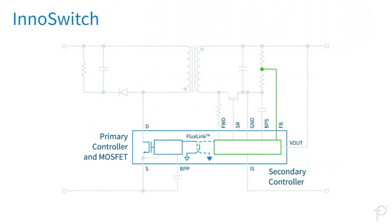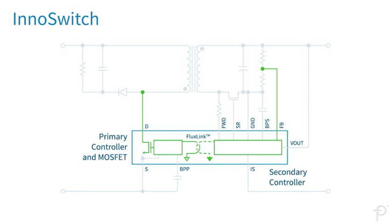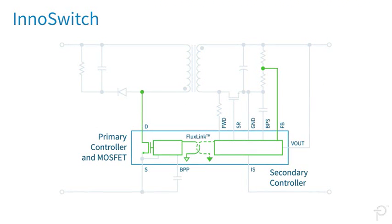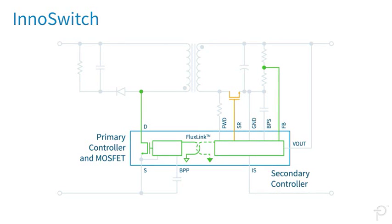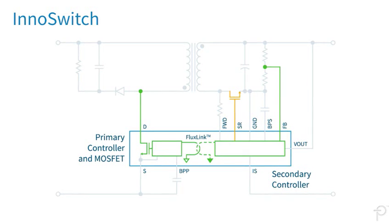Management of the primary switching activation from the secondary side via FluxLink permits accurate control of the synchronous rectification MOSFET and safe operation in both continuous and discontinuous conduction modes.